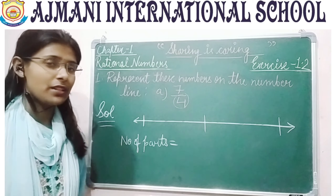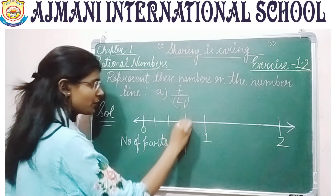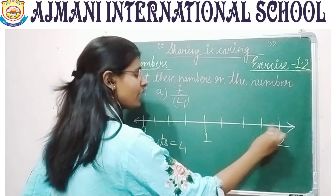The denominator is 4, so divide each unit into 4 parts, giving 8 parts total between 0 and 2. Mark 1 by 4, 2 by 4, 3 by 4, then 4 by 4 which equals 1, then 5 by 4, 6 by 4, 7 by 4, and 8 by 4 which equals 2. The point 7 by 4 is your required rational number and you have your answer. Similarly, try to do part B on your own.